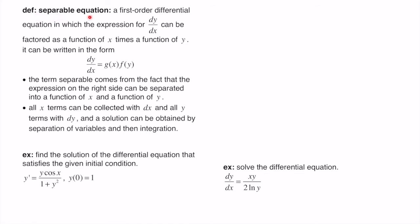A separable equation is a first-order differential equation in which the expression for dy/dx can be factored as a function of x times a function of y. It can be written in the form dy/dx equals g(x) times f(y). The term 'separable' comes from the fact that all x terms can be collected with dx and all y terms with dy, and a solution can be obtained by separation of variables and then integration.